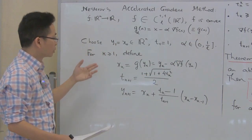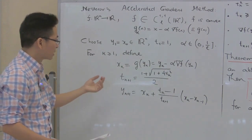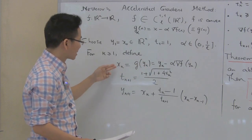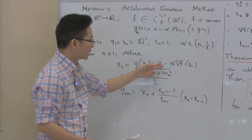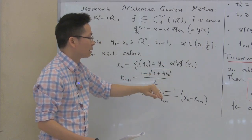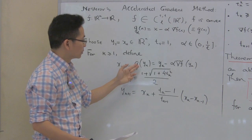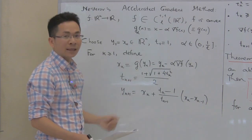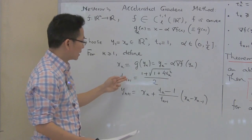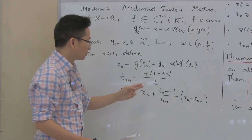For k greater than or equal to 1, we define x_k and y_k as follows. First, we perform an iteration of gradient descent: x_k equals y_k minus alpha times the gradient of f at y_k. That means x_k equals T(y_k). After that, t_{k+1} is defined by the formula: (1 + sqrt(1 + 4t_k^2)) / 2.